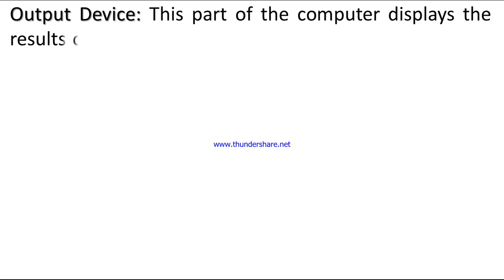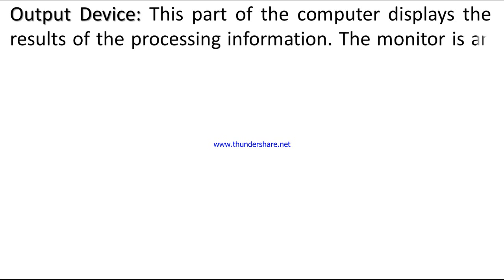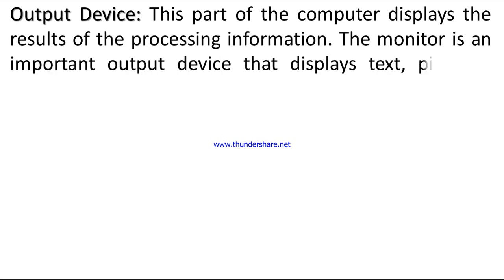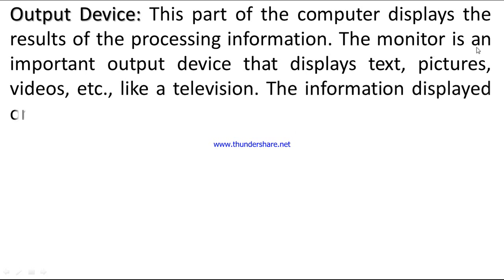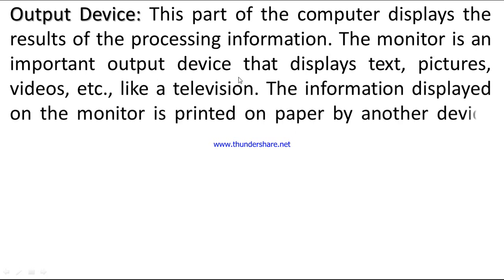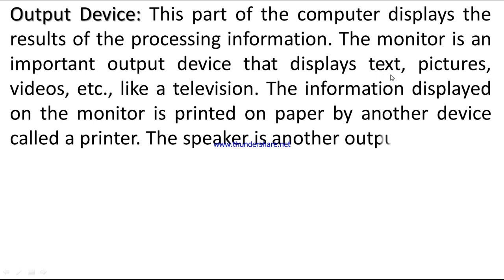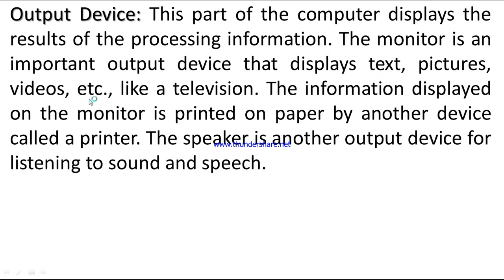Output device: this part of the computer displays the results of the processed information. The monitor is an important output device that displays text, pictures, videos, etc., like a television. The information displayed on the monitor can be printed on paper by another device called a printer. The speaker is another output device for listening to sound and speech.